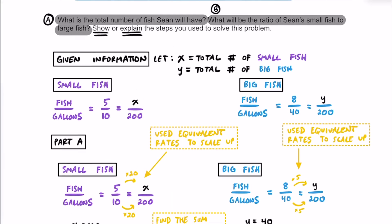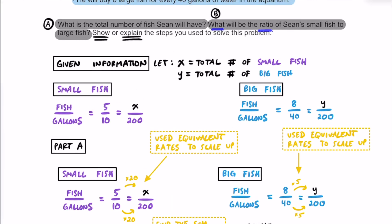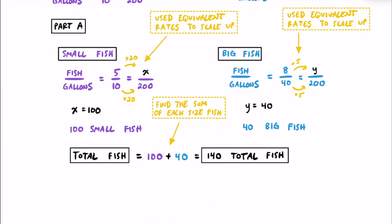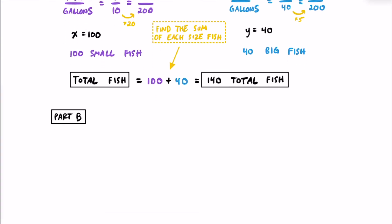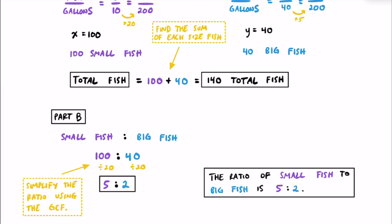For part B, we set up the ratio of small fish to large fish. Using our values: 100 small fish to 40 large fish. We simplify by dividing both by their GCF of 20: 100 ÷ 20 = 5 and 40 ÷ 20 = 2. The simplified ratio is 5 to 2. Since 5 and 2 are relatively prime, this can't be simplified further. The ratio of small fish to large fish is 5:2.